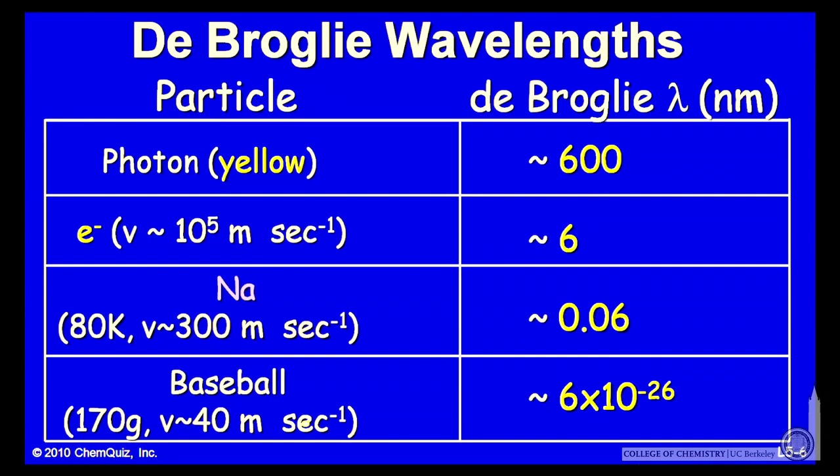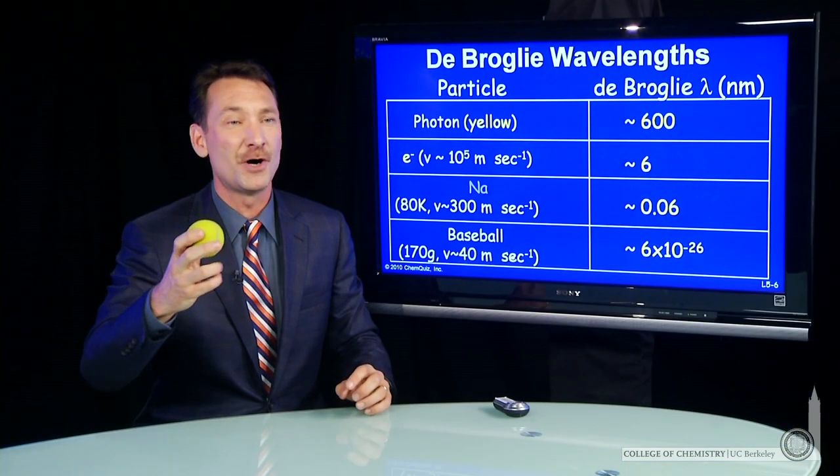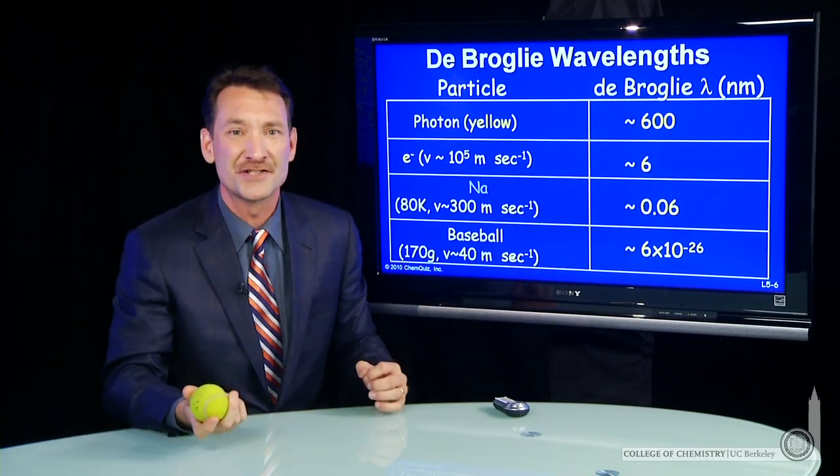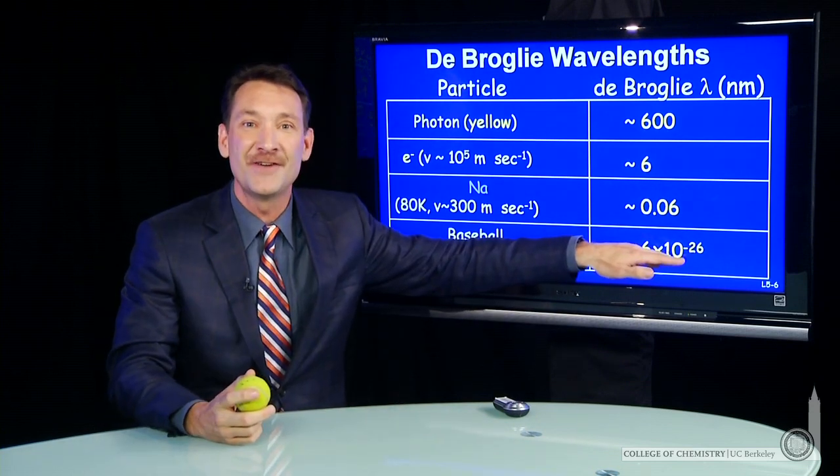This is an incredibly small distance. It's so small, it's insignificant. And that's why if you take a macroscopic object, if I take this tennis ball and I throw it, I give it a velocity, I don't notice a wavelength. You don't notice a wavelength because the wavelength is vanishingly small.